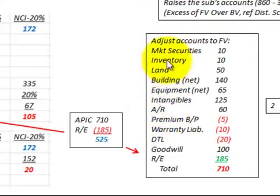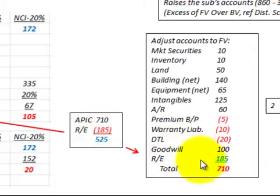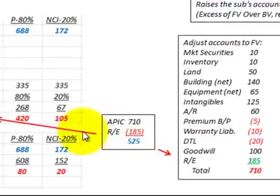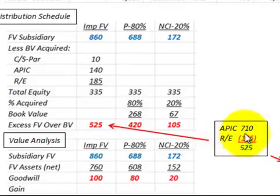Looking at the adjustments to our accounts from the carrying value to the fair value: we took the total adjustment of $710,000 and added that to the additional paid-in capital for the subsidiary at fair value. Then if you subtract out the retained earnings included in this adjustment — $185,000 — the total amount would be $525,000. That matches the excess of fair value over book value of $525,000, which is the point about these adjustments and how we adjust up to fair value for the subsidiary.